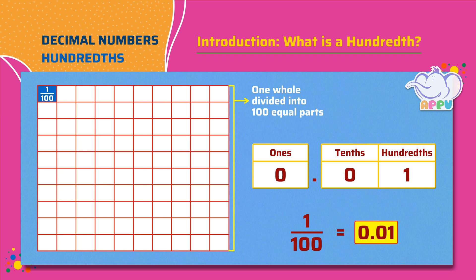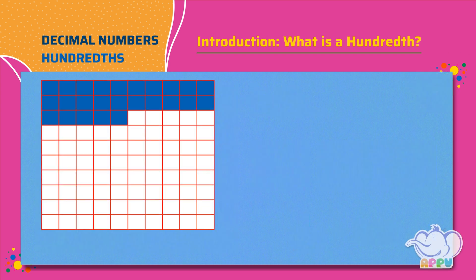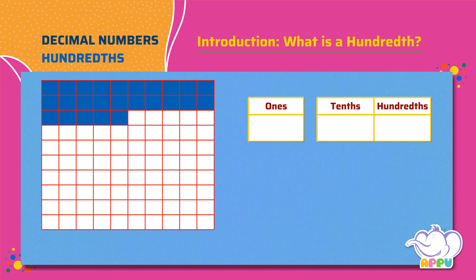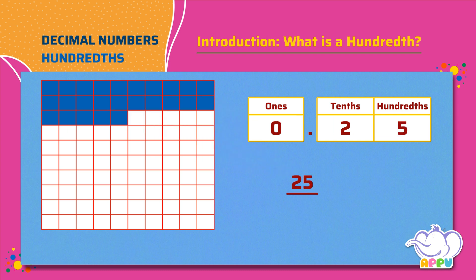Let's see another example. Write the blue shaded part as a decimal number. We write this in a place value chart. There are zero ones, two one-tenths, and five one-hundredths. So, the shaded part as a decimal number is 0.25.